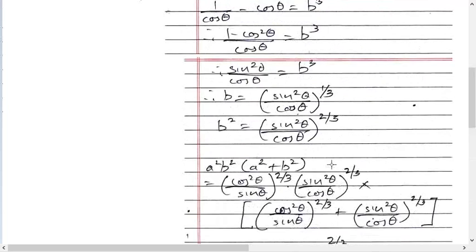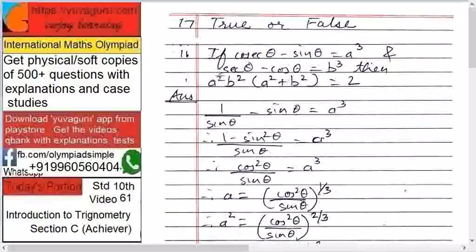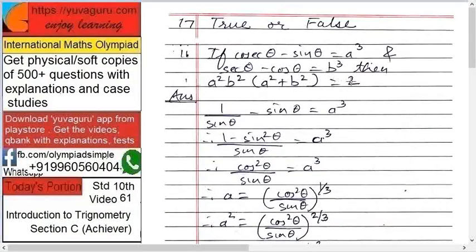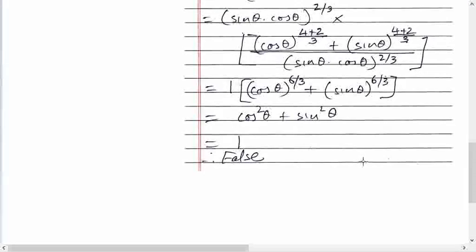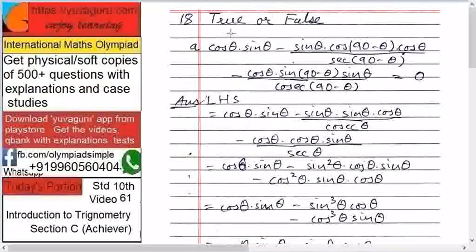What is given in the question: a square b square into a square plus b square equals 2. But what we have got is 1. So this statement is false. Next is again true or false.